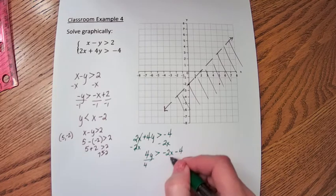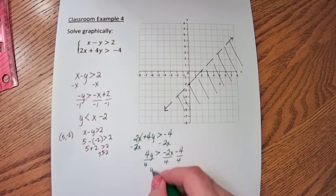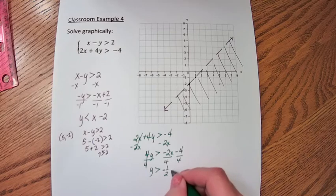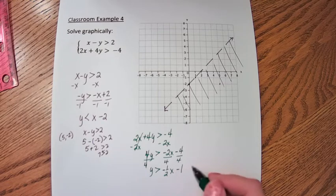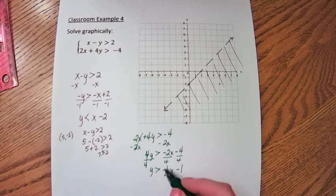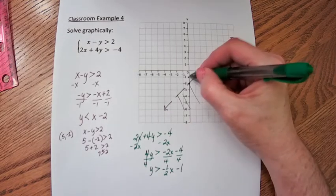4y is greater than negative 2x minus 4. We want y by itself, so we're going to divide every term by 4. y is greater than negative 1/2 x minus 1. So this has a slope of negative 1/2, down 1 over 2, and a y-intercept of negative 1.